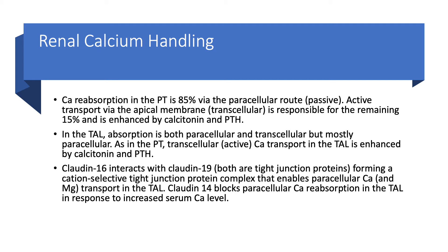Active transcellular reabsorption is enhanced by calcitonin and parathyroid hormone — calcitonin comes from the thyroid. In the thick ascending limb, we also have paracellular (passive) and transcellular (active) reabsorption, but it's mostly paracellular, like in the proximal tubule. This transcellular reabsorption is also enhanced by parathyroid hormone and calcitonin — so there are absolute similarities between the proximal tubule and the thick ascending limb.